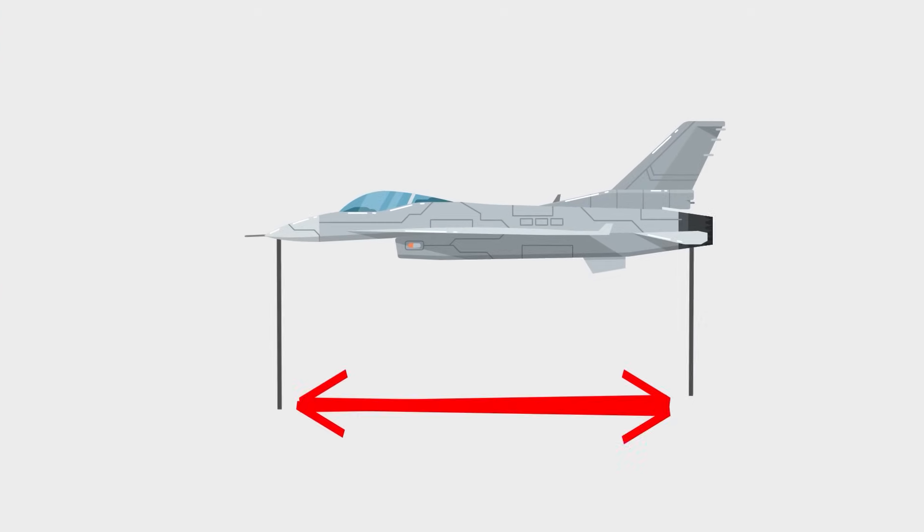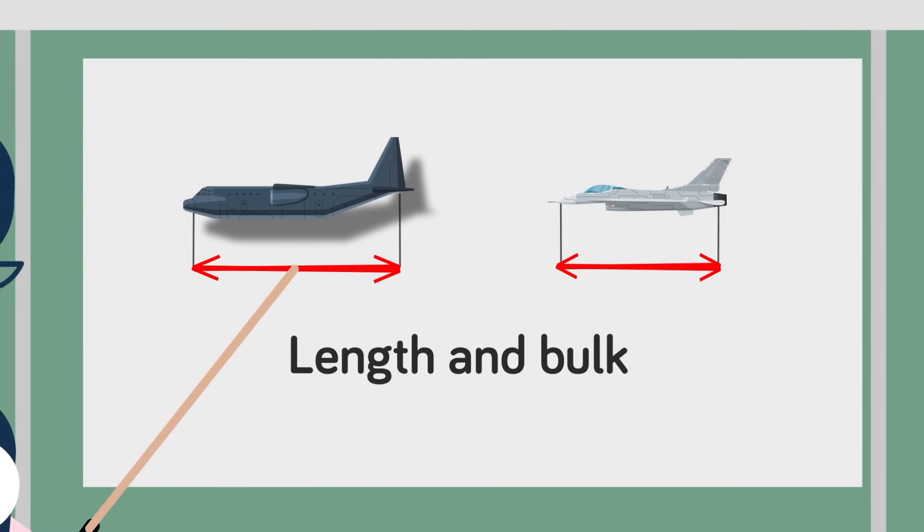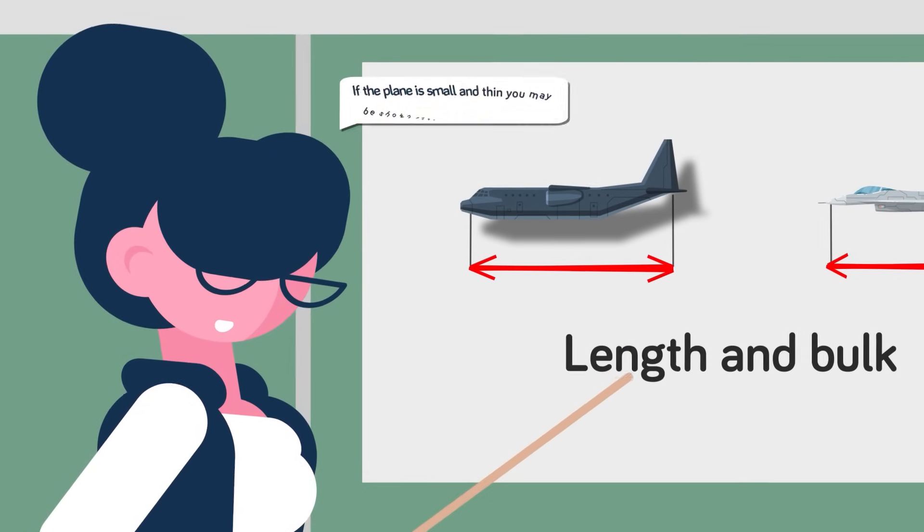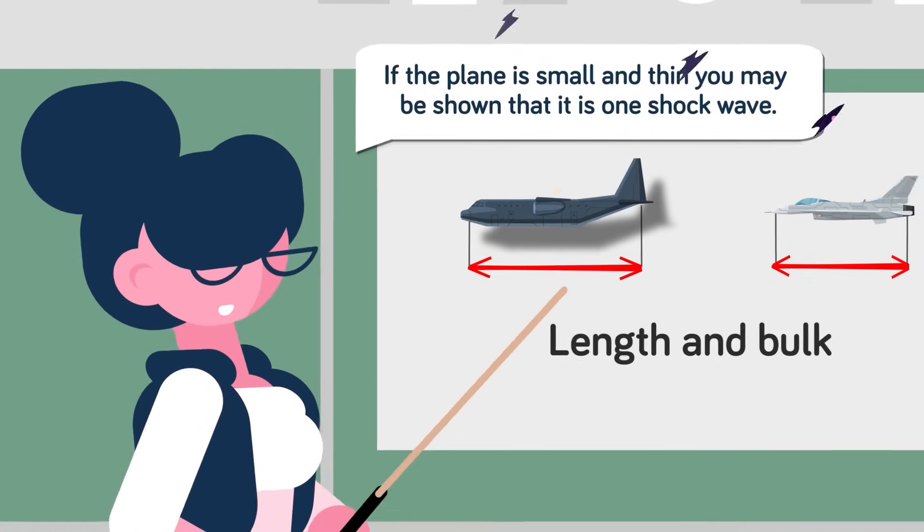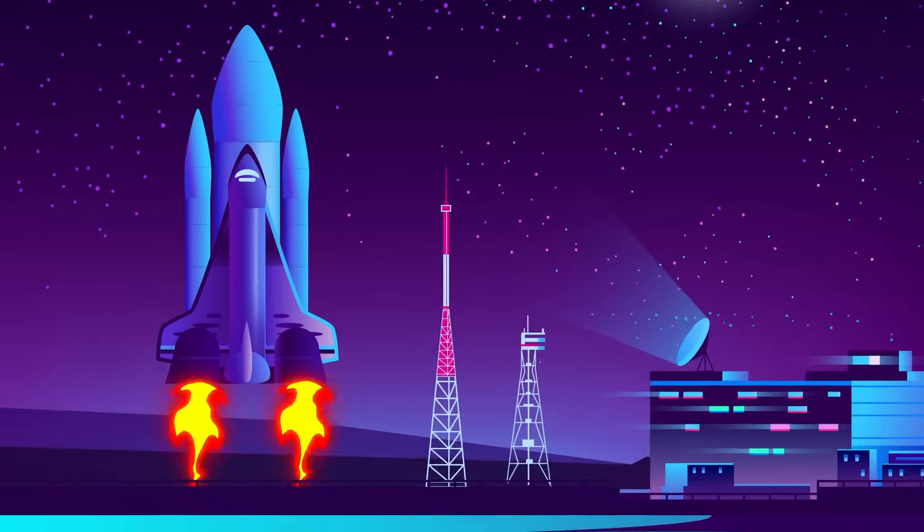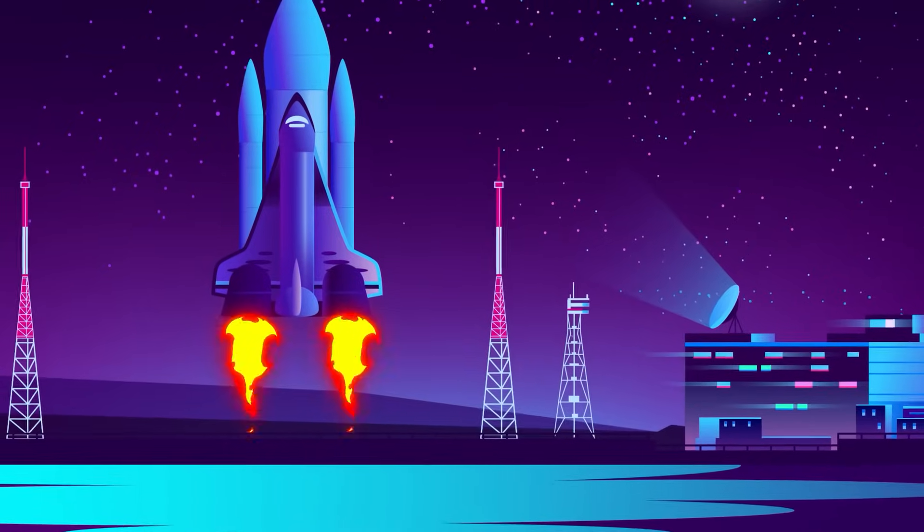Conversely, if an aircraft is small and thin, the time between the two sonic booms will be so short it might seem like there is just a single shockwave. However, this is just an illusion, as every aircraft going over Mach 1 creates two sonic booms.